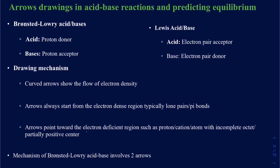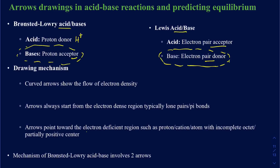As a quick refresher: your Brønsted-Lowry acid is a proton donor — any chemical that gives an H⁺ — and bases are going to be the proton acceptor. Your Lewis acid is going to be an electron pair acceptor, and your Lewis base is going to be an electron pair donor. It turns out the Brønsted-Lowry base and the Lewis base are actually the same thing, because if a base is accepting a proton, it must have a lone pair of electrons — and that's exactly the definition of the Lewis base.